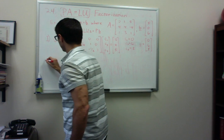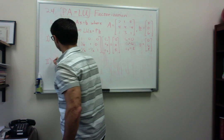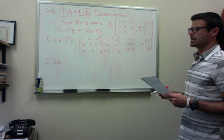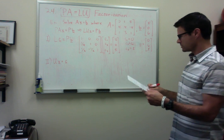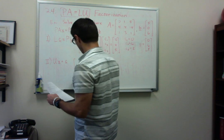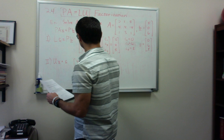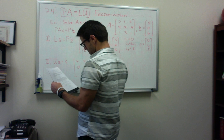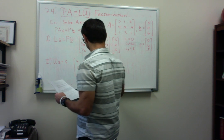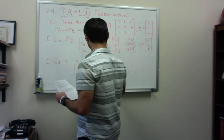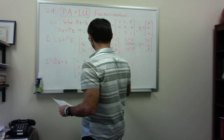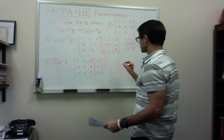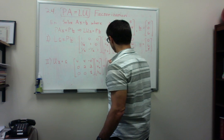And step two was to solve Ux equals C. And our matrix U from the previous video was this matrix here: four, four, minus four, zero, two, two, zero, zero, eight. And now we want to solve for x1, x2, and x3. And this all equals our vector C, that's zero, six, and eight.